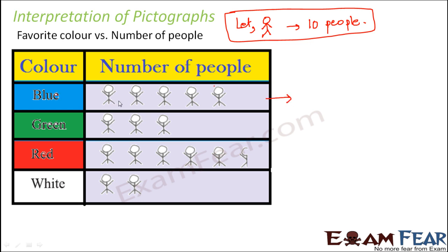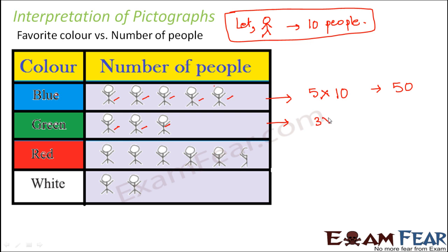Can you tell me, looking at this pictograph, how many people like blue color? How many pictures do you have? 1, 2, 3, 4, and 5 — so basically 5 into 10, because each picture represents 10 people. So blue color is liked by 50 people. What about green? Here you have three pictures, so green color is liked by 3 into 10, that is 30 people.